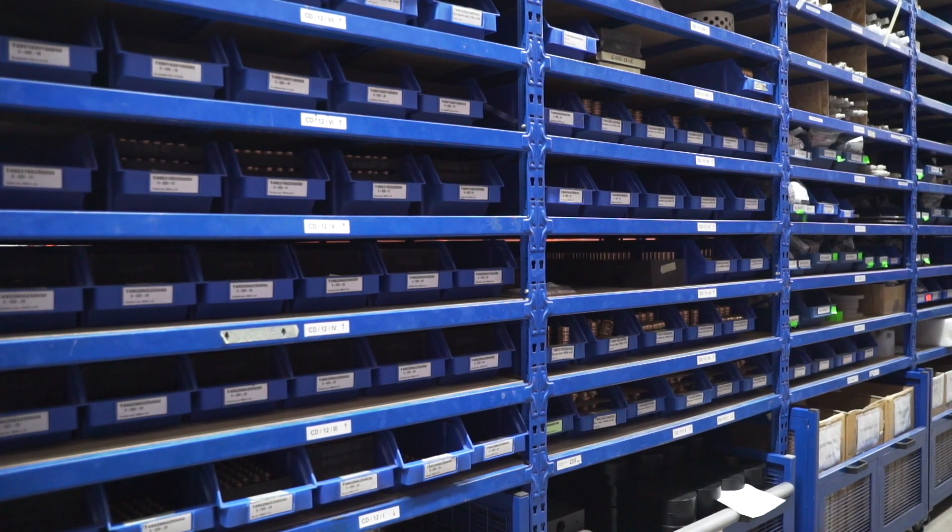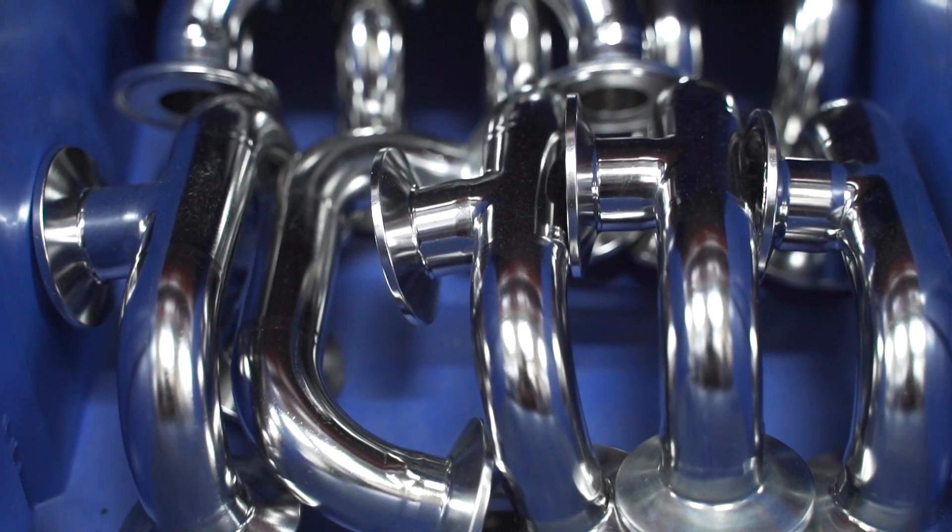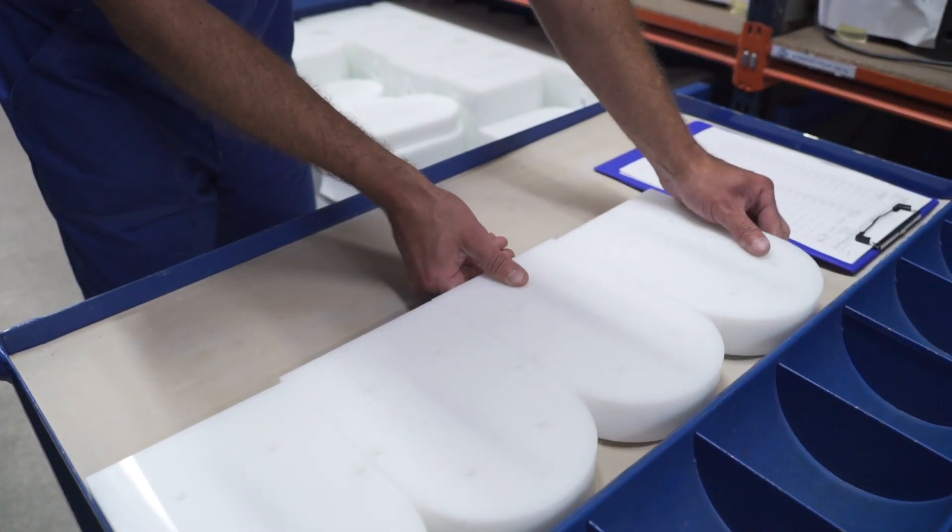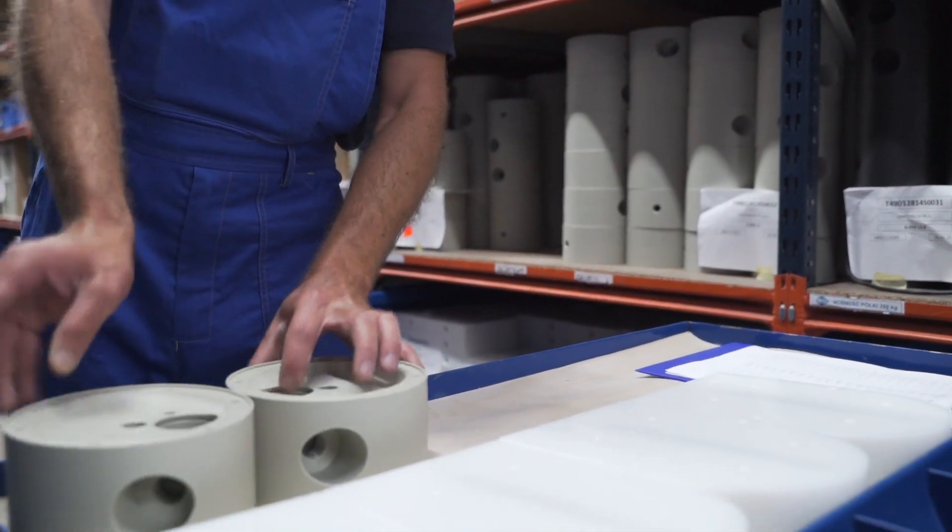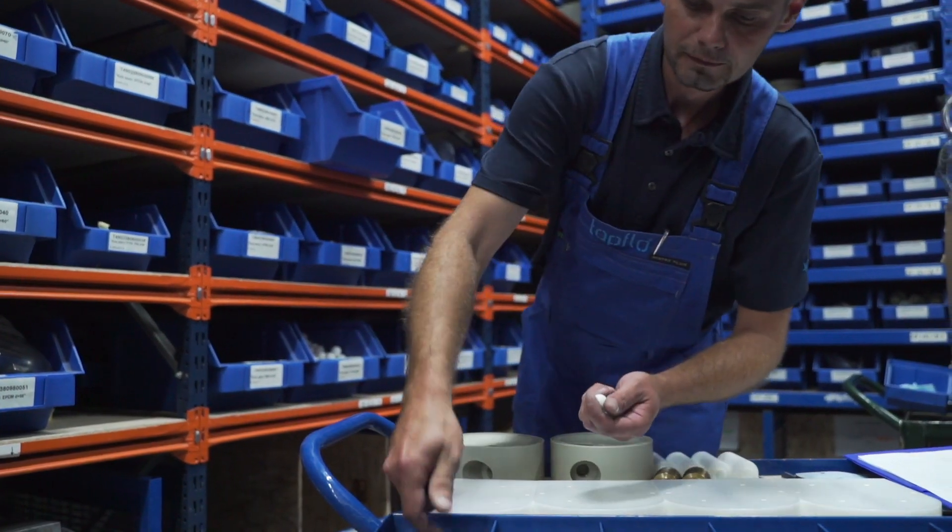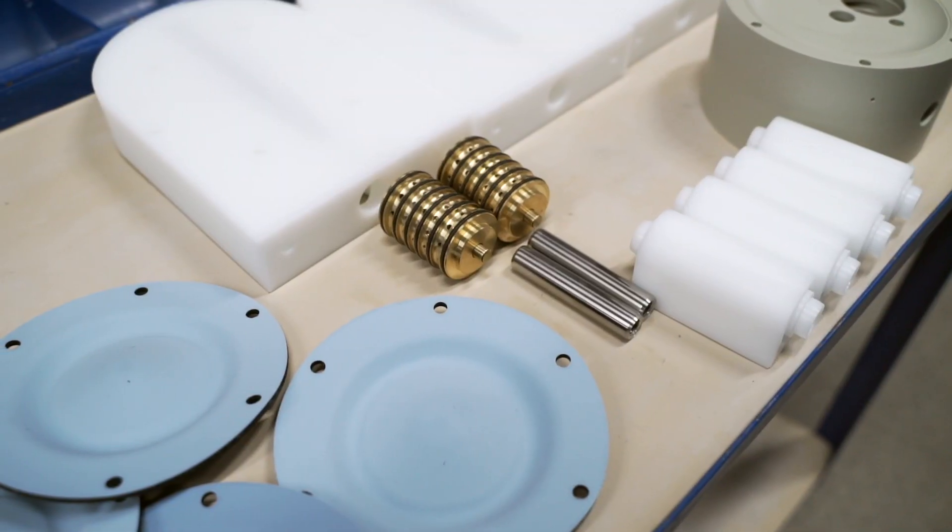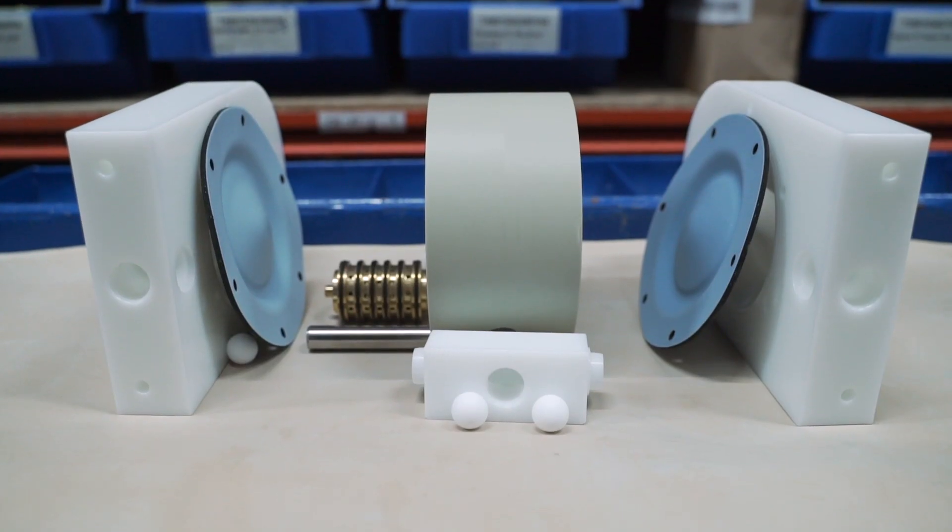Based on a production order, the components are delivered to the ready parts warehouse, where workers select parts for the assembly department. All parts used to assemble a pump are prepared.